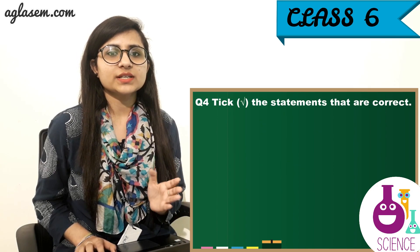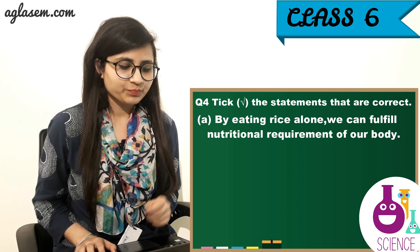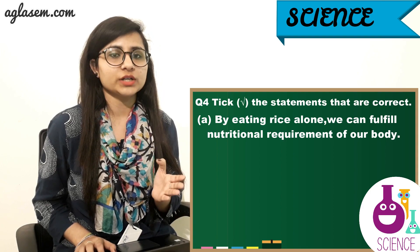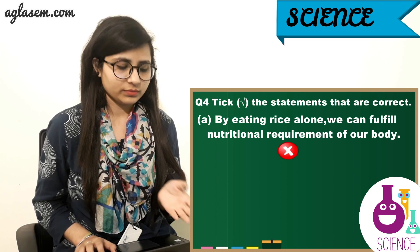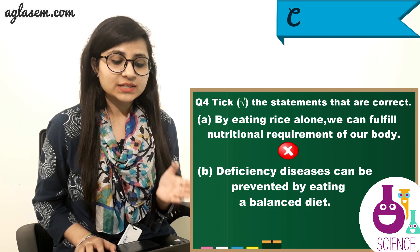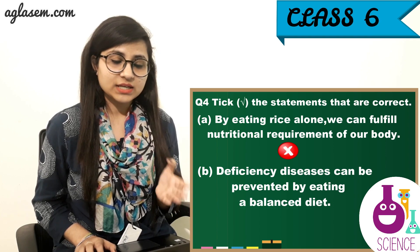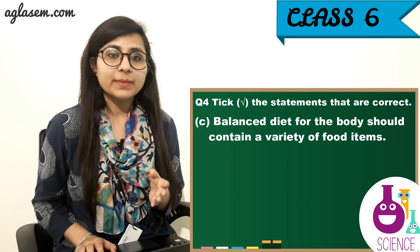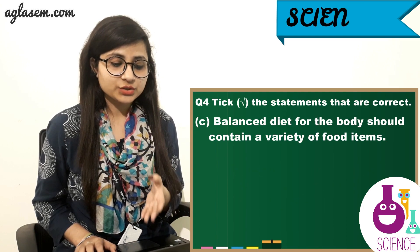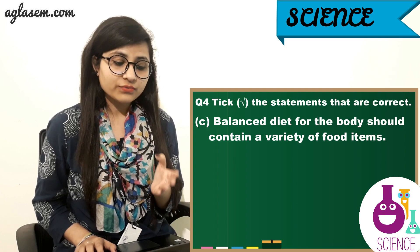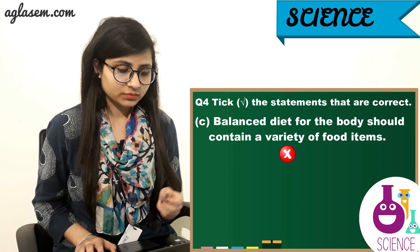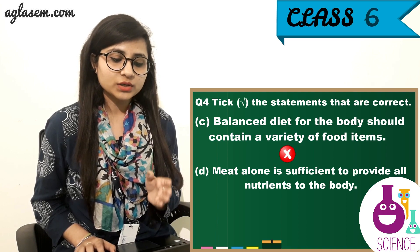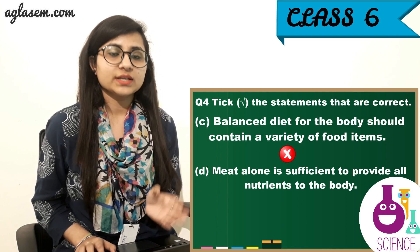Question number 4: State whether the following statements are correct. A) By eating rice alone, we can fulfill the nutritional requirement of our body — Wrong. B) Deficiency diseases can be prevented by eating a balanced diet — Right. C) A balanced diet for the body should contain a variety of food items — Wrong. D) Meat alone is sufficient to provide all nutrients to the body — Wrong.